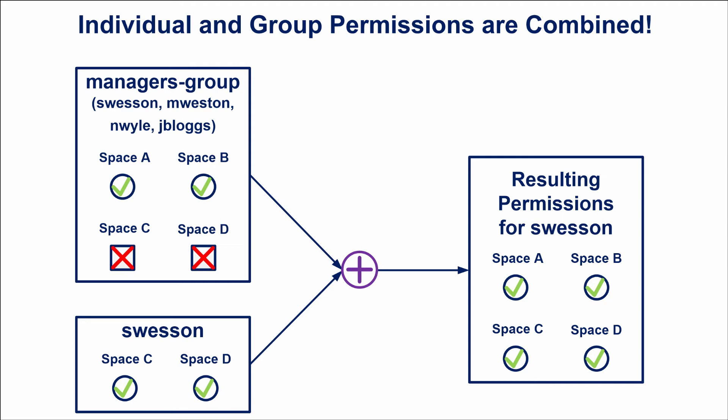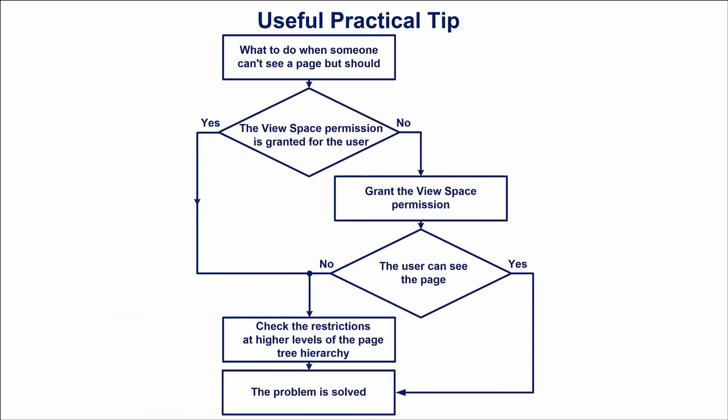Space permissions given to users directly and via the groups they belong to are additive – they can be combined. Note that space permissions are granted at the space level, whereas page restrictions are designed to take away said permissions. If the person you've listed as a viewer or editor can't see the page, make sure he or she has permission to view the space and there is no view restriction at a higher level of the page hierarchy.